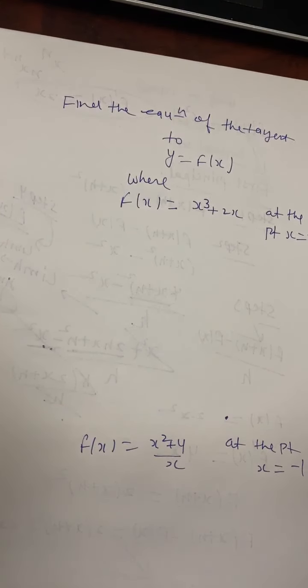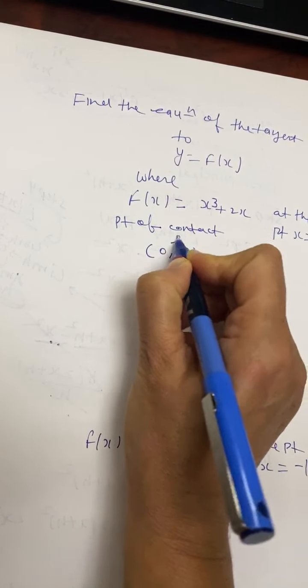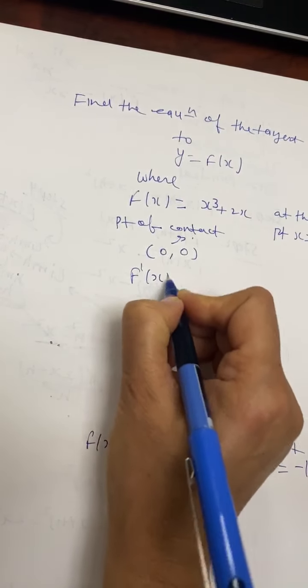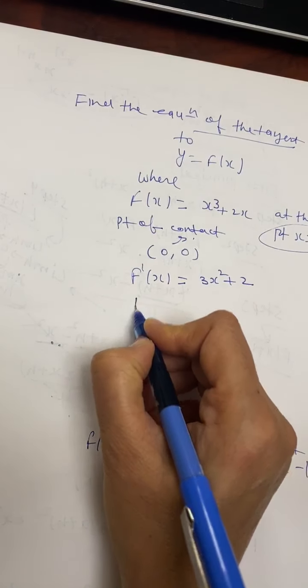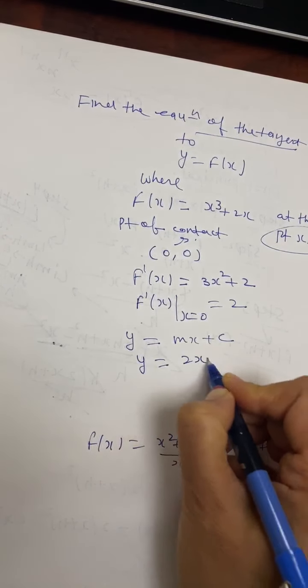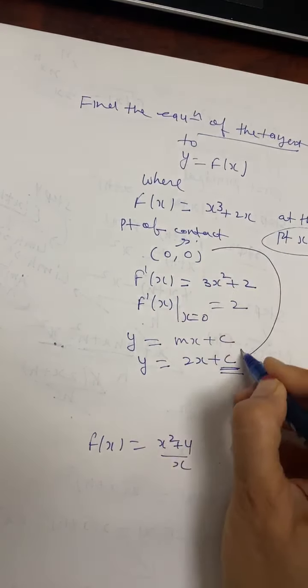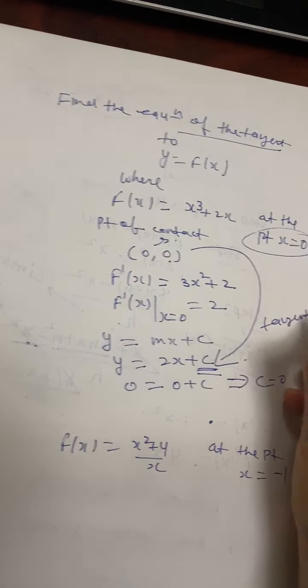Next example: find the equation of the tangent to y equals f(x) where f(x) equals x cubed plus 2x, at the point x equals 0. First, the point of contact: f(0) equals 0, so the point is (0, 0). Then f'(x) equals 3x squared plus 2. At x equals 0, f'(0) equals 2, so m equals 2. The equation is y equals 2x plus c. Substituting (0, 0): c equals 0. So the tangent equation is y equals 2x.